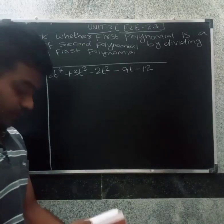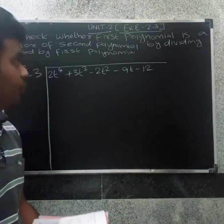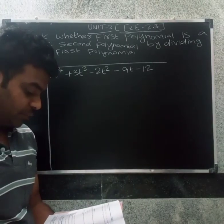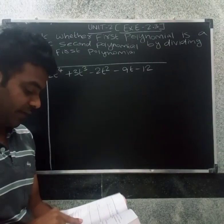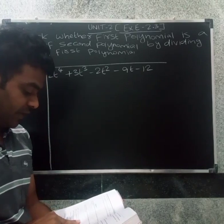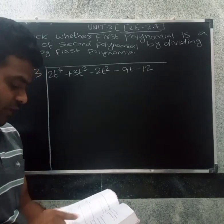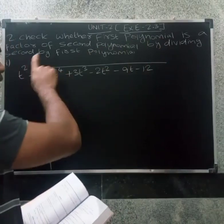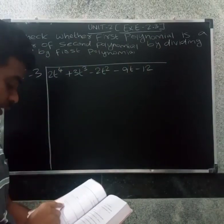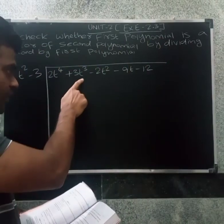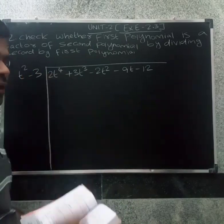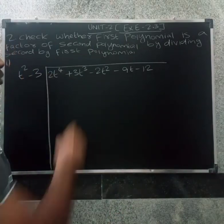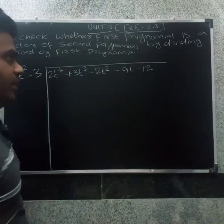Welcome friends. In this case, we need to extract. Check if the denominator is a factor of the second polynomial by dividing the second polynomial by the first polynomial. By dividing the second polynomial by the first polynomial, we can check if the second polynomial is a factor. If you want to check if the denominator is a factor of the second polynomial.